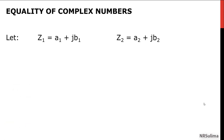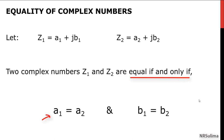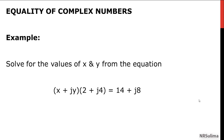For the first part, suppose we have two distinct complex numbers, Z1 and Z2. These two numbers are said to be equal if and only if their respective real parts and imaginary parts are equal. For example, solve for the values of X and Y from the equation: quantity X plus JY, multiplied by quantity 2 plus J4, equals 14 plus J8.